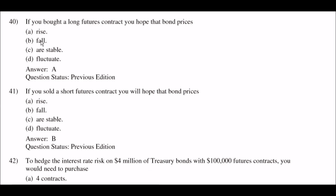Next question: if you bought a long futures contract, you hope that bond prices — option A: rise; option B: fall; option C: are stable; option D: fluctuate. The right answer is option A: rise.